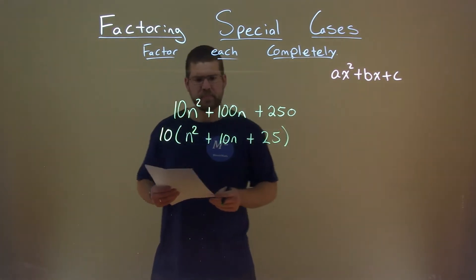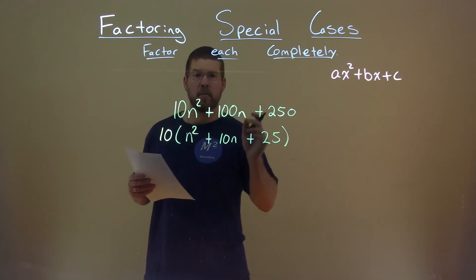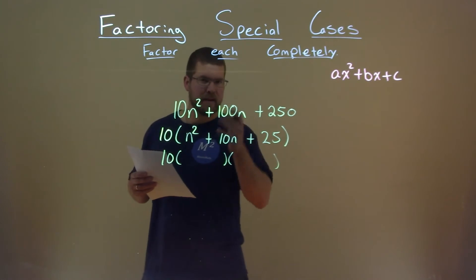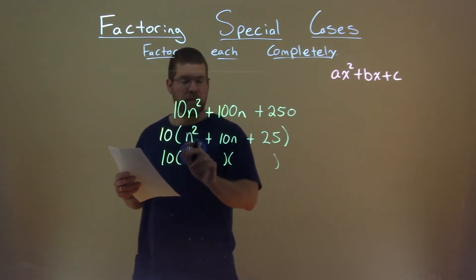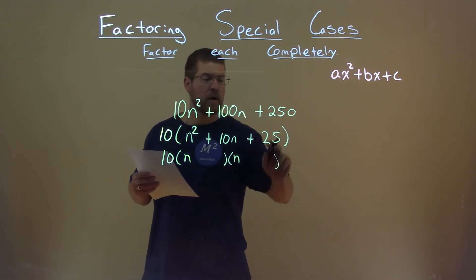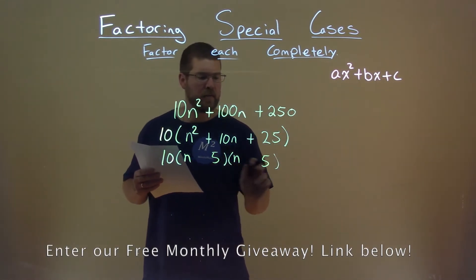Okay, now from here, our first term and last term are both perfect squares. That's a thing that I think about and see, and that's going to help us here. Square root of n squared is n, so n times n here is that n squared. Square root of 25 is 5, so 5 times 5 is 25.